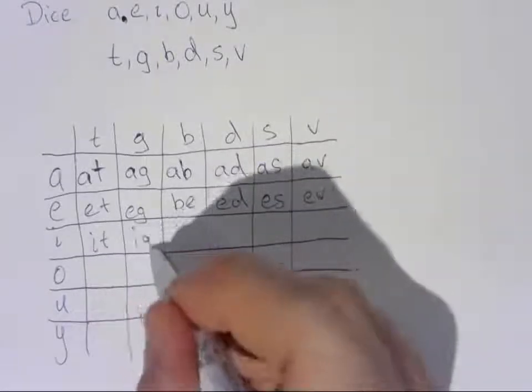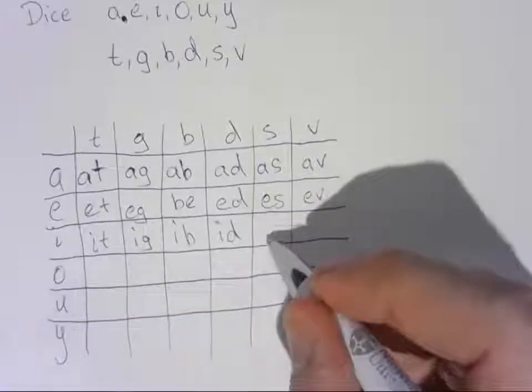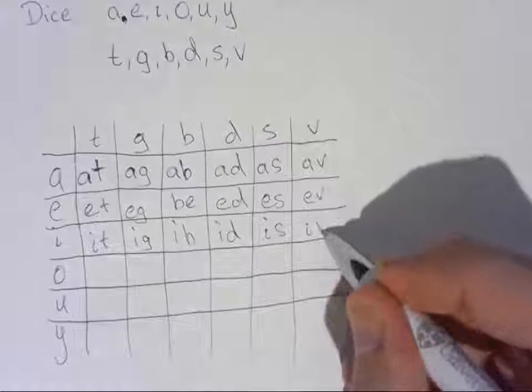I, T, of course, is a word. I, G, I, B, I, D, also a word. If you're not sure what that one is, check that out in your dictionary.